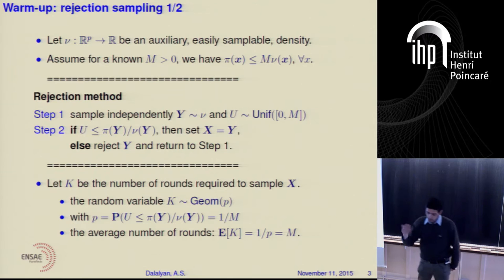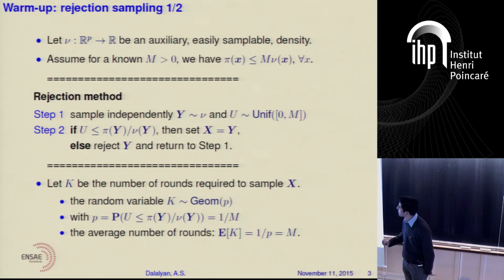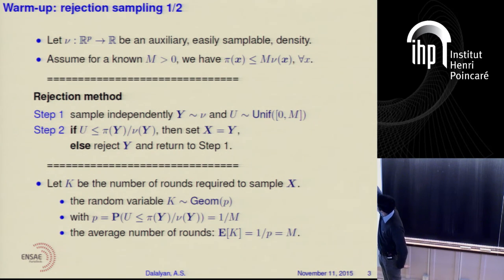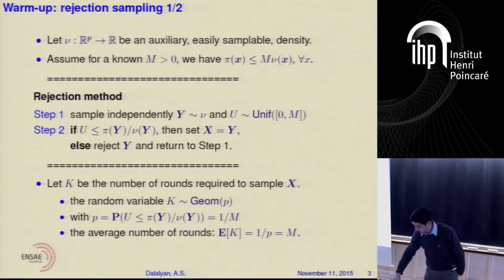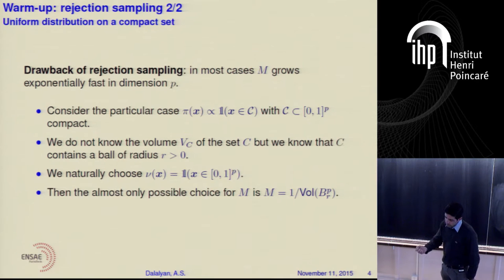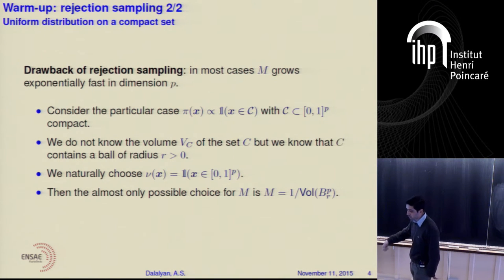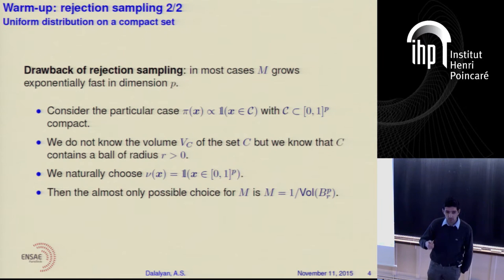So if we use the rejection method in any setting, the average complexity of the resulting algorithm equals capital M, which represents the supremum norm of the ratio of the target density over the auxiliary density nu. This is a very nice method, but if we apply it in a high-dimensional situation, in most cases it doesn't work well because the number of steps required to get acceptance is extremely large. This is basically due to the fact that the constant capital M in high dimensions grows exponentially fast in P.